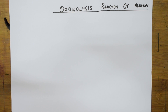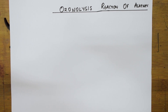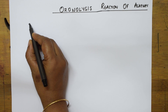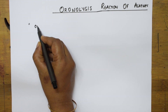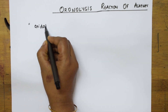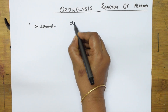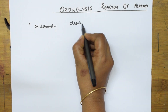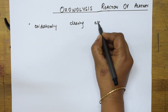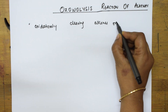Now we will be studying the ozonolysis reactions of alkenes. The same basic idea of ozonolysis we will be studying in alkynes also. Ozonolysis is nothing but oxidatively cleaving alkenes, or as I said, alkynes also. Let us write the definition first.